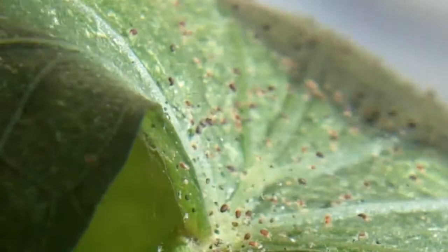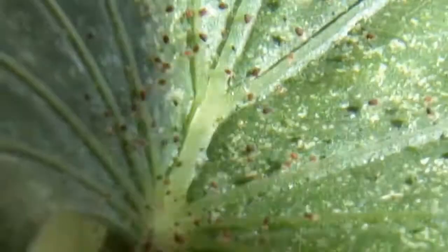They don't look like aphids to me, and I don't think they're spiders. They might be a mite, but I haven't seen them before on my vegetables.